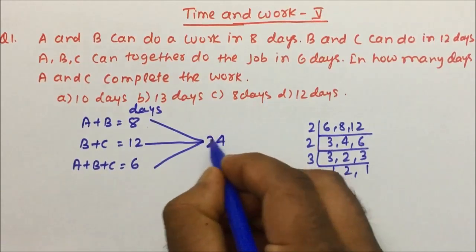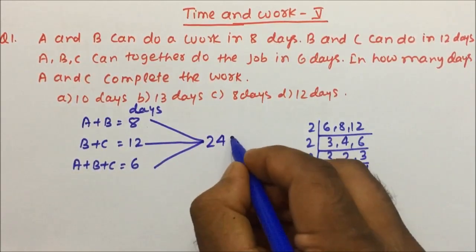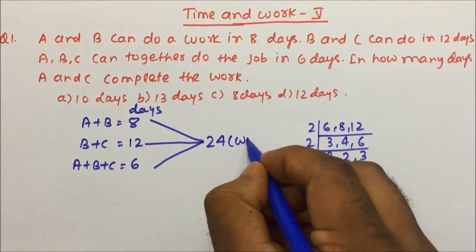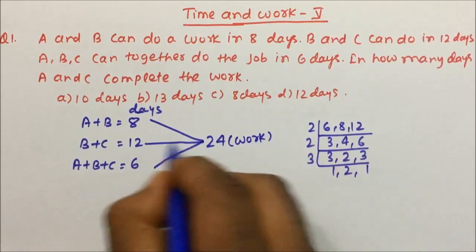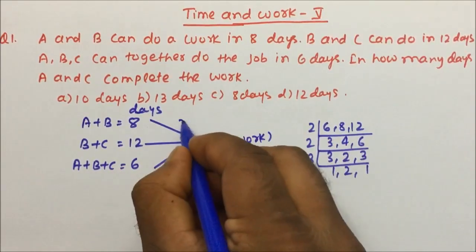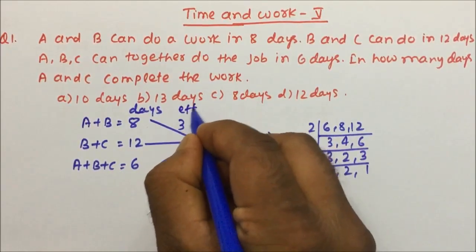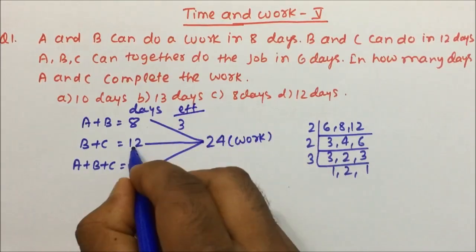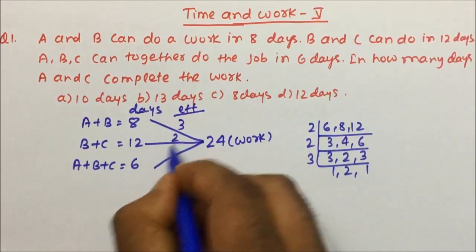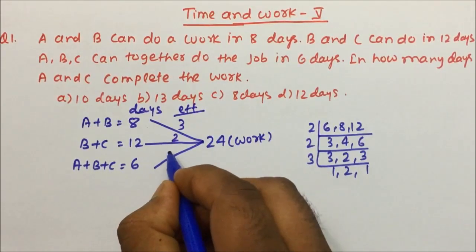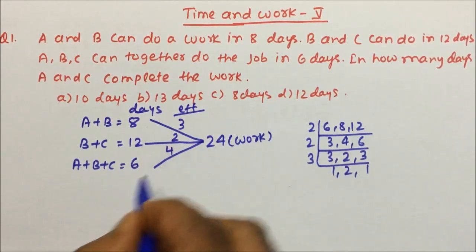Either you take the LCM or take a number divisible by all three. Once we take the LCM, it becomes our total work. So: 24 ÷ 8 = 3 (efficiency of A+B), 24 ÷ 12 = 2 (efficiency of B+C), and 24 ÷ 6 = 4 (efficiency of A+B+C).